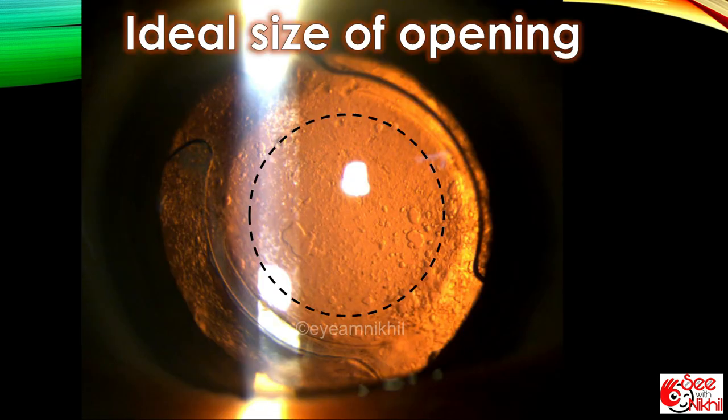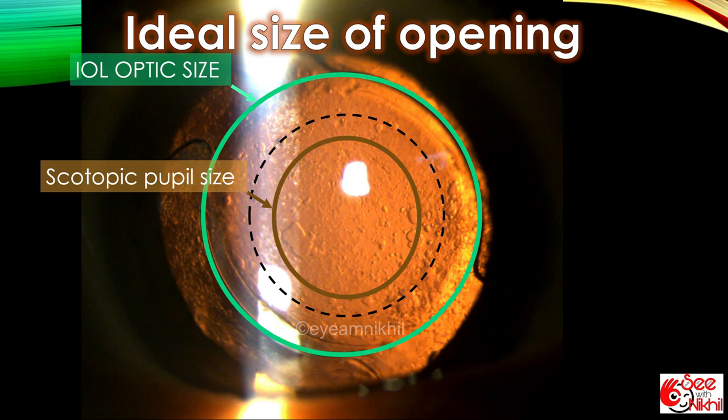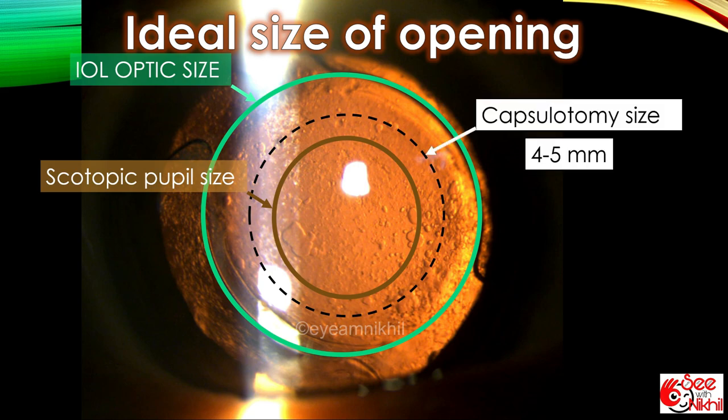Size of capsulotomy should be less than that of the IOL optic size but greater than the pupil size in scotopic conditions. So it is roughly around 4 to 5 millimeters. A capsulotomy that is larger than the optic size can result into vitreous prolapse.